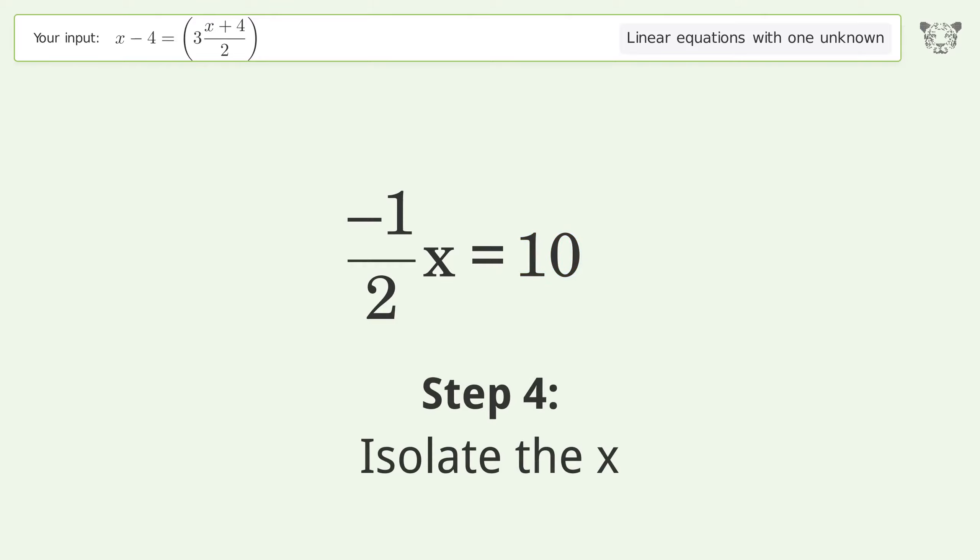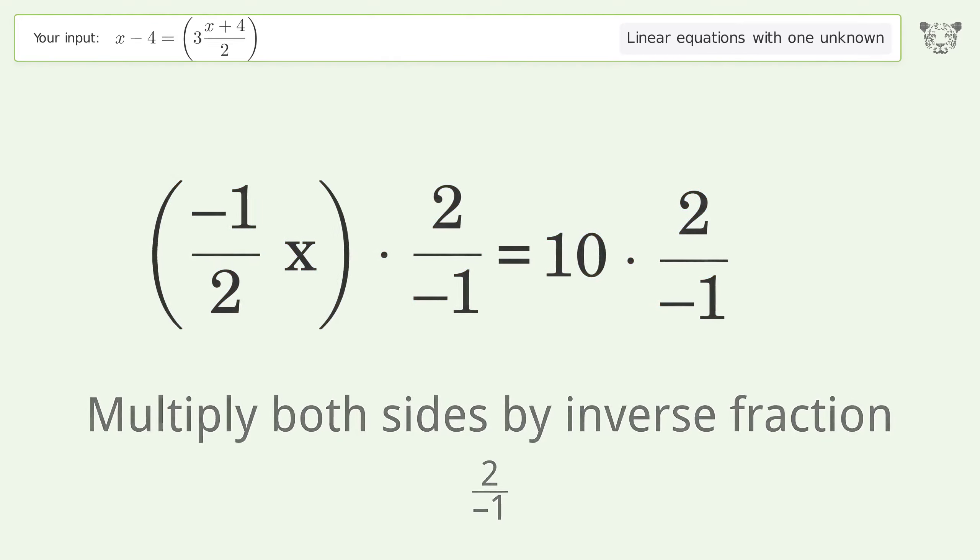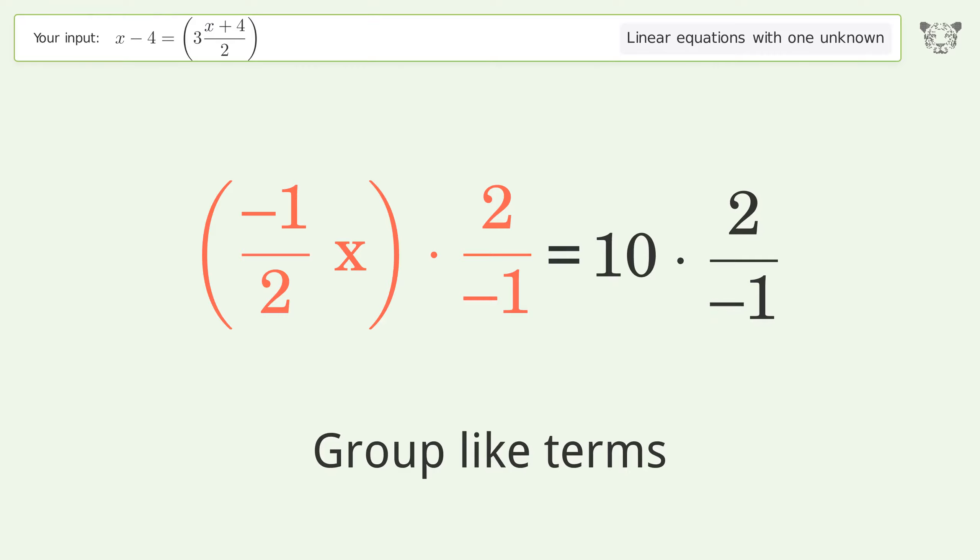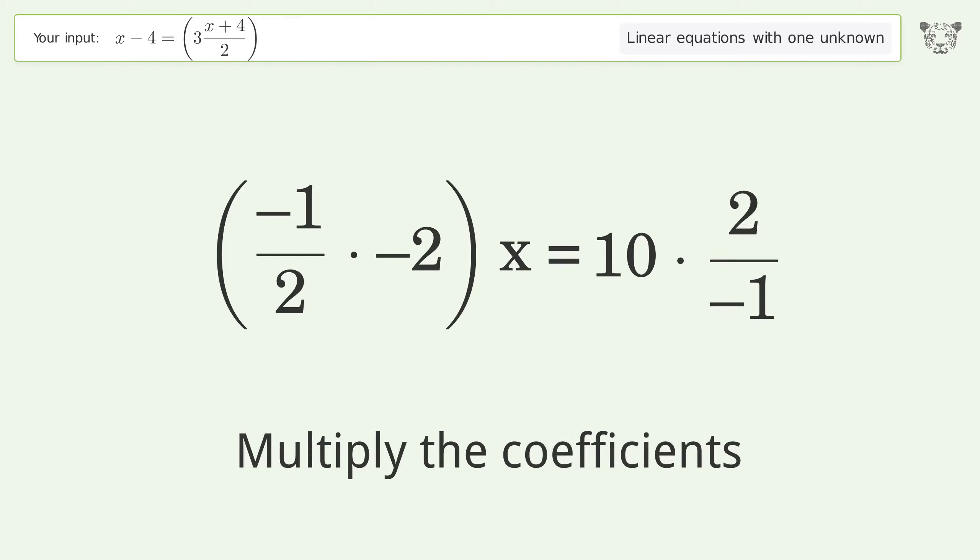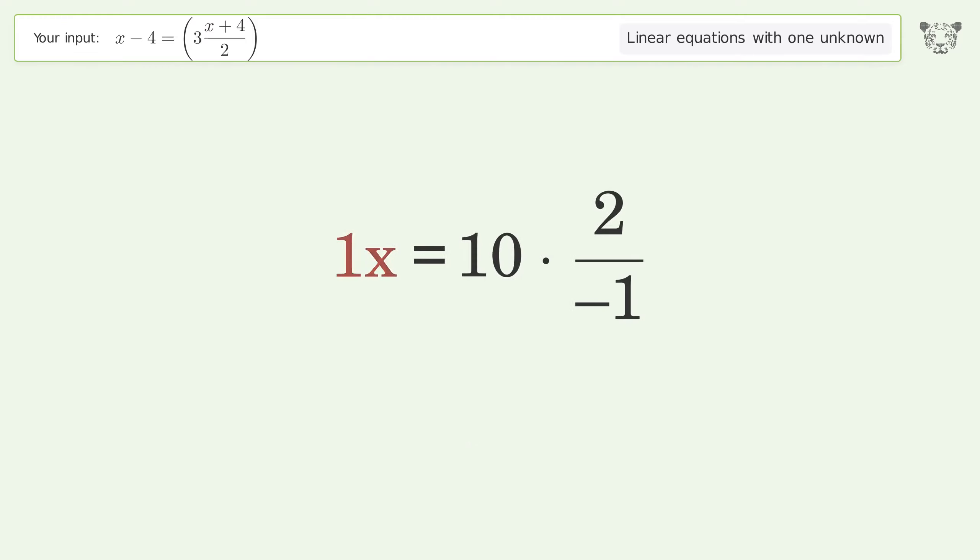Isolate the x. Multiply both sides by the inverse fraction, 2 over negative 1. Group like terms. Multiply the coefficients. Simplify the arithmetic. And so the final result is x equals negative 20.